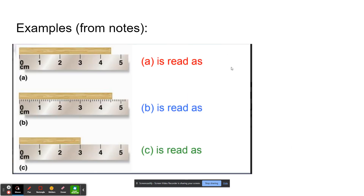Here are some examples from the class notes. This could be read as four centimeters — that's the digit you're certain of — but you can guess one more, so you would say 4.5, and that would have two sig figs.